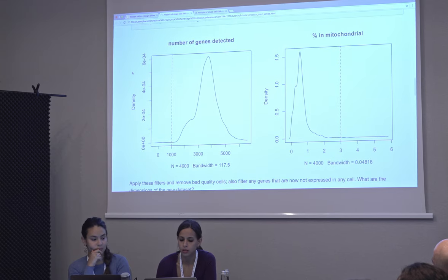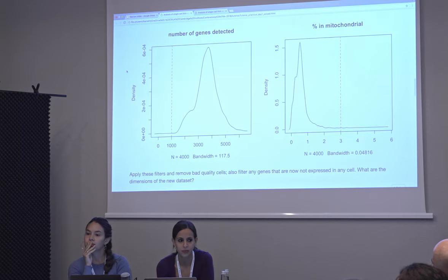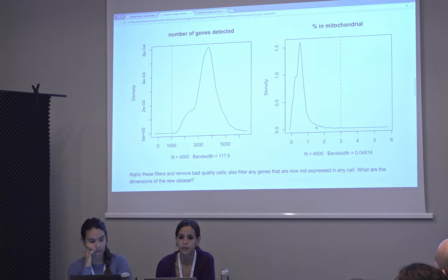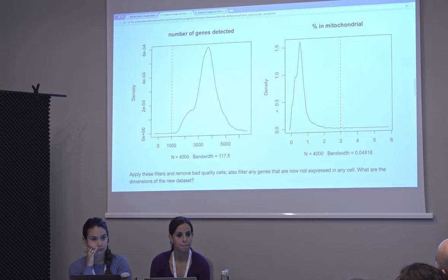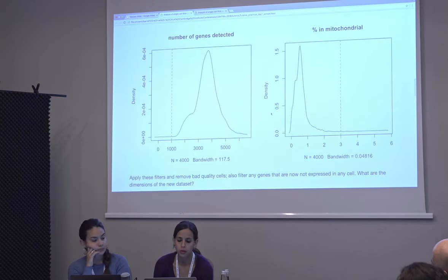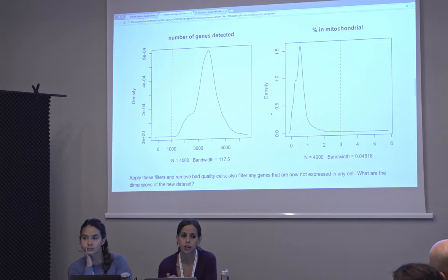These are the thresholds reported in the paper. You could be more strict if you want — at least with the mitochondria ones you could take it down to 2 or 1.5. I checked and it doesn't change much — it's only a few cells that get removed. If you're not going to lose too much and you want to be stricter, that will give you a cleaner dataset that probably has less noise and is easier to work with.